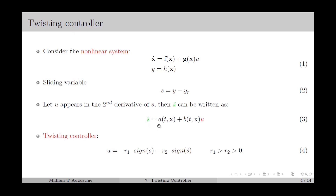In the twisting controller, the control law is chosen as in equation number 4, where r1 and r2 are positive scalars which are the switching gains. The sign of s gives a value of plus 1 if s is positive and minus 1 if s is negative. Similarly, sign of s-dot will give a value of plus 1 if s-dot is positive and minus 1 if s-dot is negative.